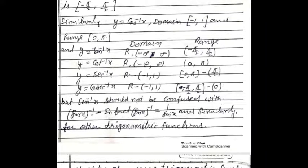Similarly, y = cot⁻¹x has domain of real numbers R and range (0, π). And y = sec⁻¹x has domain of real numbers except (−1, 1), and range [0, π] except π/2.